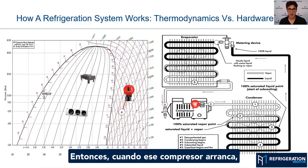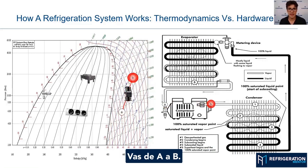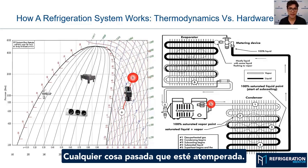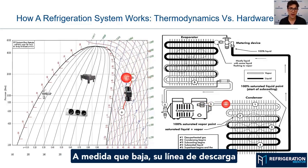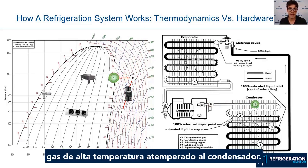As that compressor starts up, you have heat of compression. You go from A to B. At that discharge port, that's the hottest point. Anything past that is desuperheated. So as it goes down your discharge line, it's desuperheated — high pressure, high temperature gas desuperheated to the condenser.